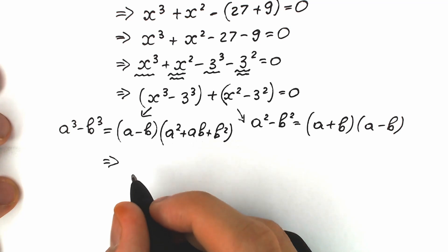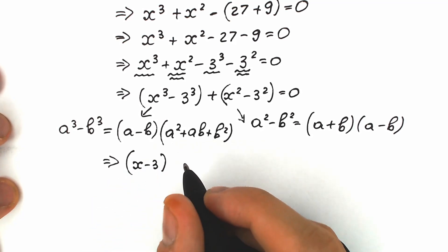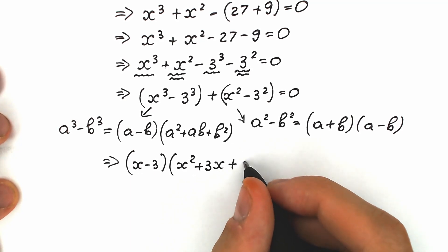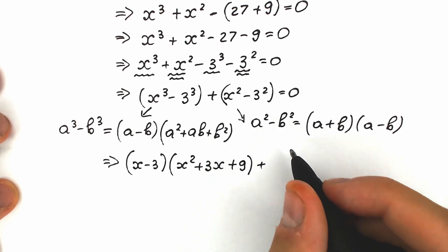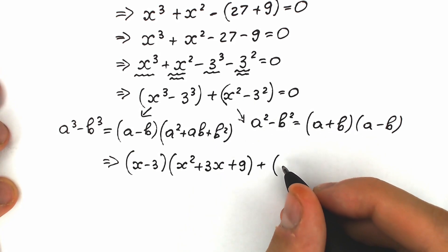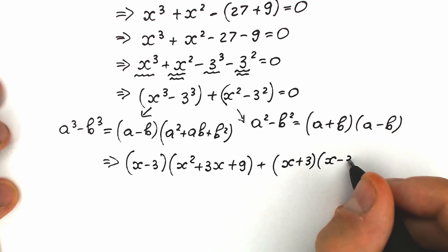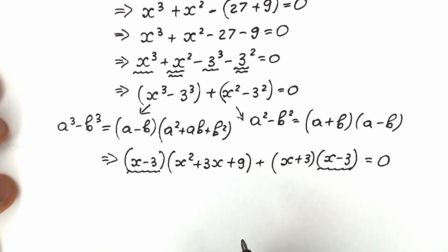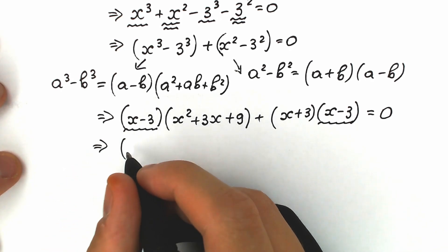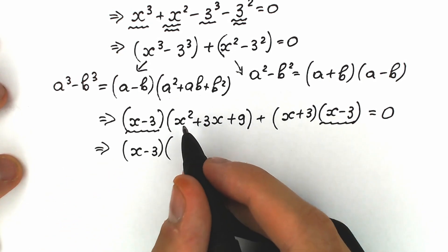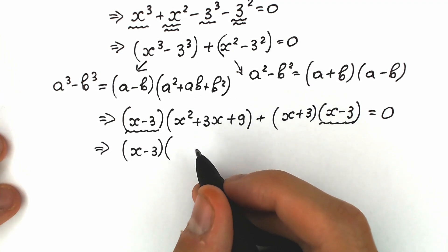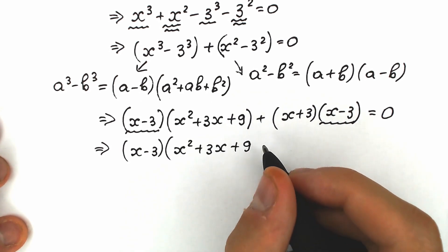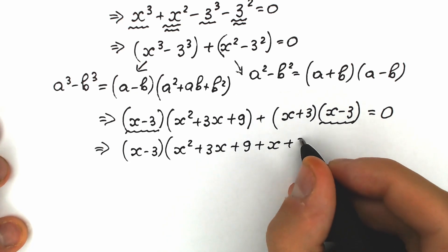Applying the difference of cubes: x³ - 3³ = (x - 3)(x² + 3x + 9). And for the difference of squares: x² - 3² = (x + 3)(x - 3). Factoring out the common factor (x - 3), we get: (x - 3)[(x² + 3x + 9) + (x + 3)] = 0.